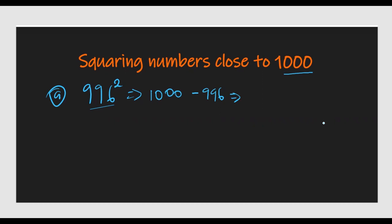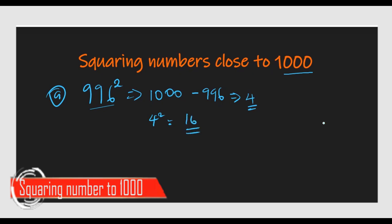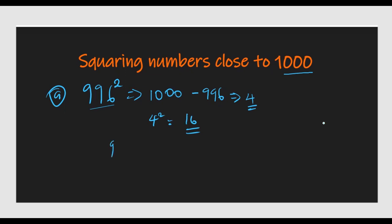Remember, I'm writing this to demonstrate, but if you're doing mental math this should be easy to master. When you look at 996, you already know the answer should be around 992016. The difference is 4, so we take 4 squared, which gives us 16. That 16 is going to be the last part of the answer.